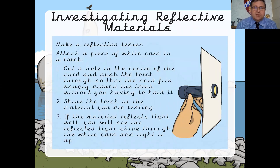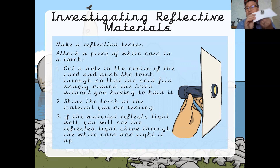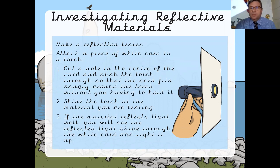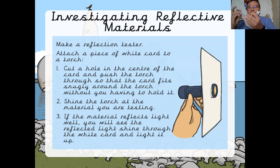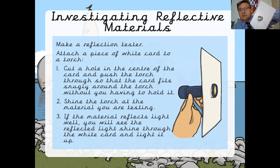In our investigation the first thing we've got to do is make a reflection tester. To do this you'll need a piece of white card and a torch. You cut a small hole in the piece of white card and then you put the torch through the hole so that your tester looks something like that.